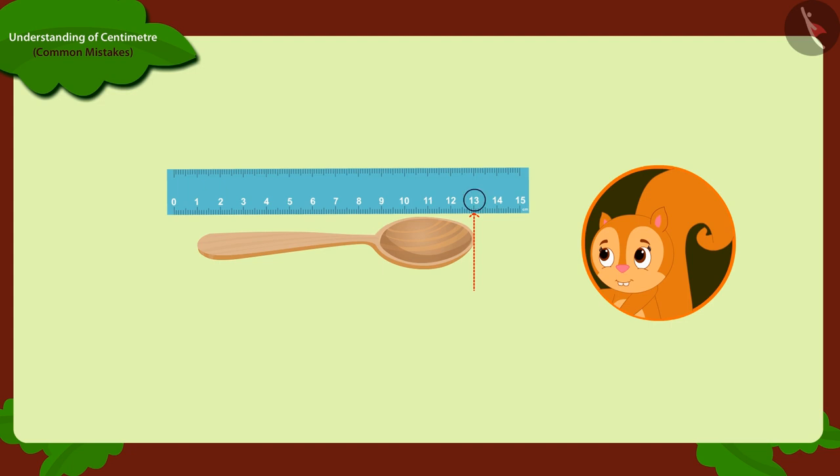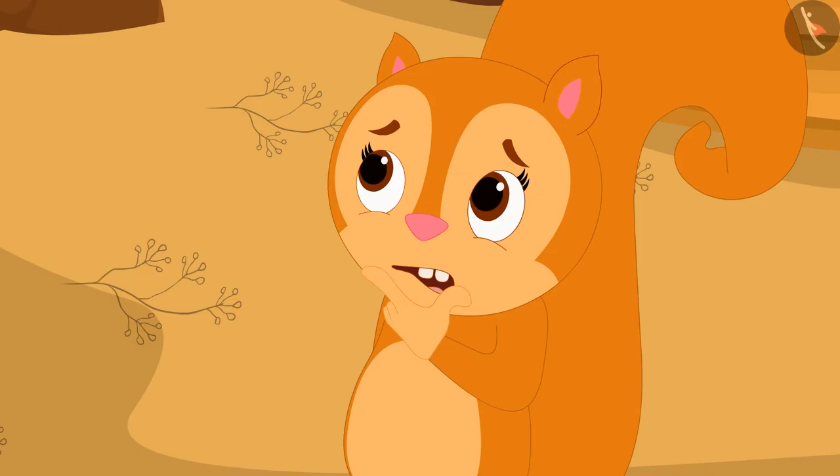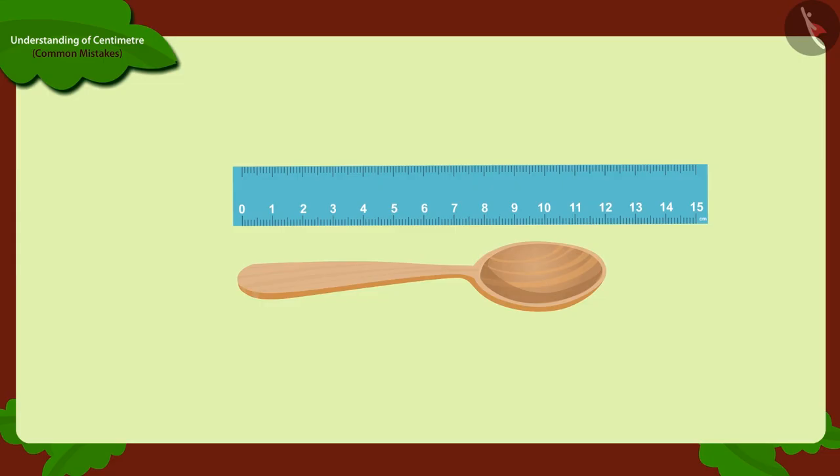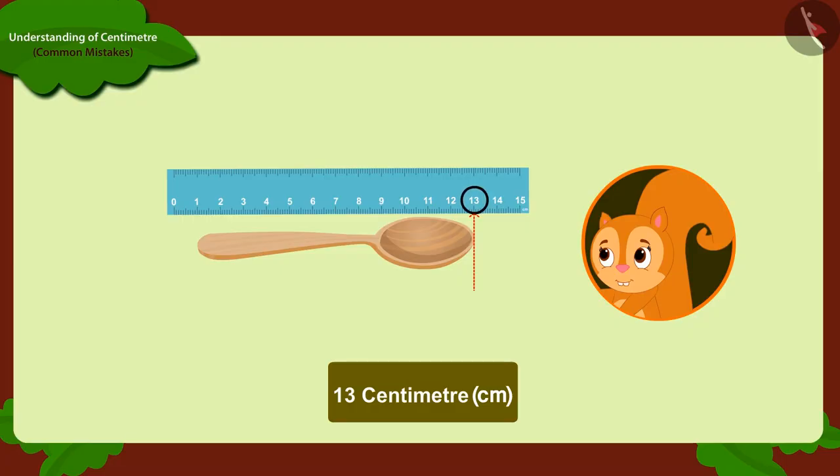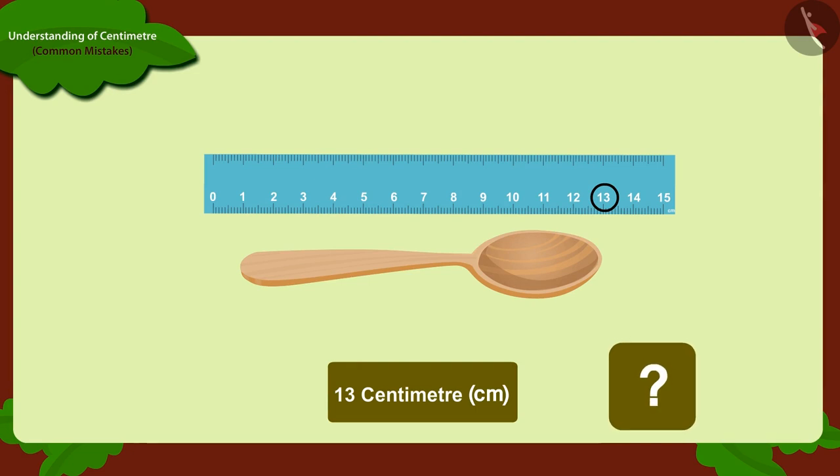But what is that? Chanda got the length of the spoon as 13 centimeters this time. Chanda started wondering how it happened when Appu measured the length of that spoon it was 12 centimeters. Then how did it become 13 centimeters today? Kids, can you tell what mistakes Chanda has made here?